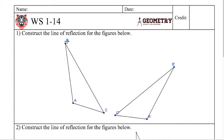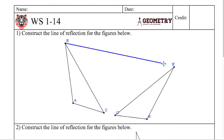Alright, so number one: construct a line of reflection for the figures below. I get to choose any corresponding pre-image and image. So I'm just going to choose A, A prime, C, C prime — I'm going to choose B, B prime because it's a little bit clearer to see what's going on. Any of these will be the same answer.